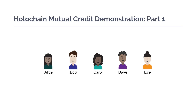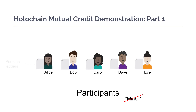In Holochain, everyone is an equal participant — there are no miners. Every participant keeps their own personal ledger, which contains all of the transactions they've participated in. When two participants would like to transact — in this case Alice and Bob — they first make sure that the other's ledger is valid. They then both sign a transaction, which gets added onto their ledgers. Note that this is a digital signature, so it cannot be forged.